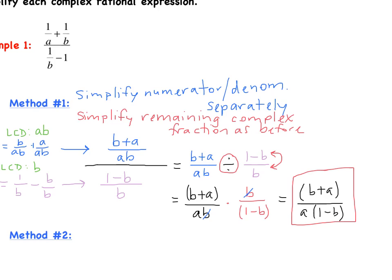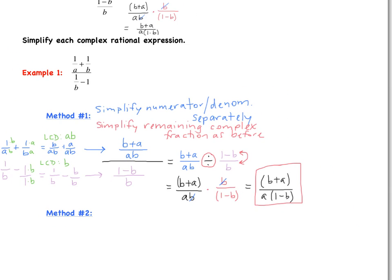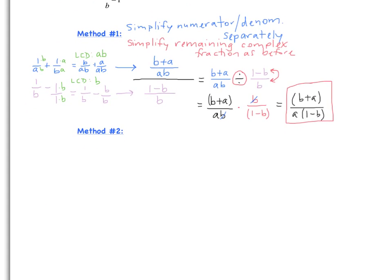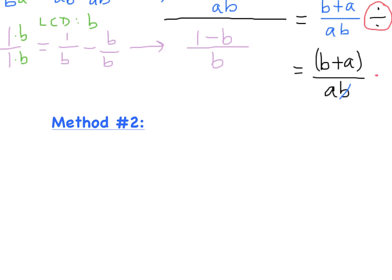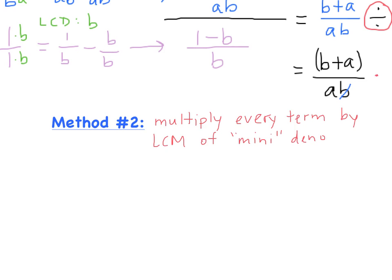In method 1, you combine the numerator into one fraction, combine the denominator into one fraction, and then you've got a complex fraction the same as before. The other method is to multiply every term by the LCM of what I call the mini-denominators — the little denominators within this entire complex rational expression.